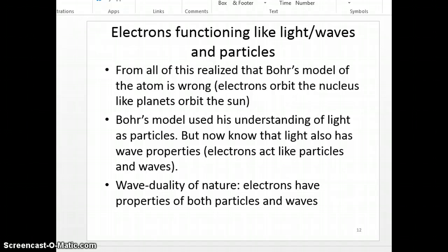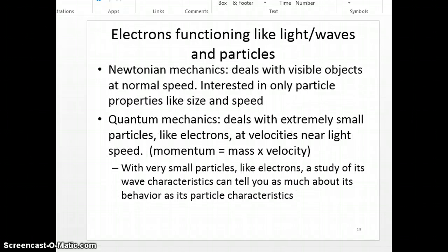Because of that came a new line of thinking. For a long time, Newtonian mechanics was the focus of study for scientists. But with all this new information, scientists now have focused on quantum mechanics. Newtonian mechanics deals with visible objects at normal speed. You're only interested in particle properties like size and speed. Quantum mechanics deals with extremely small particles like electrons at velocities near light speed. And if you remember, momentum is mass times velocity. So with very small particles like electrons, a study of its wave characteristics can tell you as much about its behavior as its particle characteristics. So you have to look at wave and particle characteristics of an electron to fully understand where this electron is at.